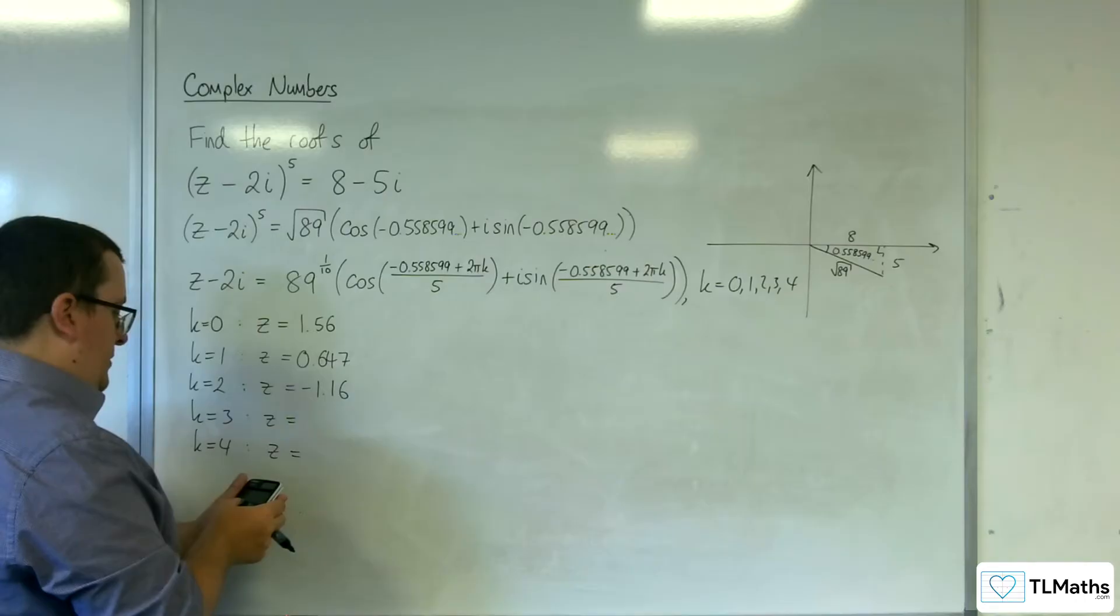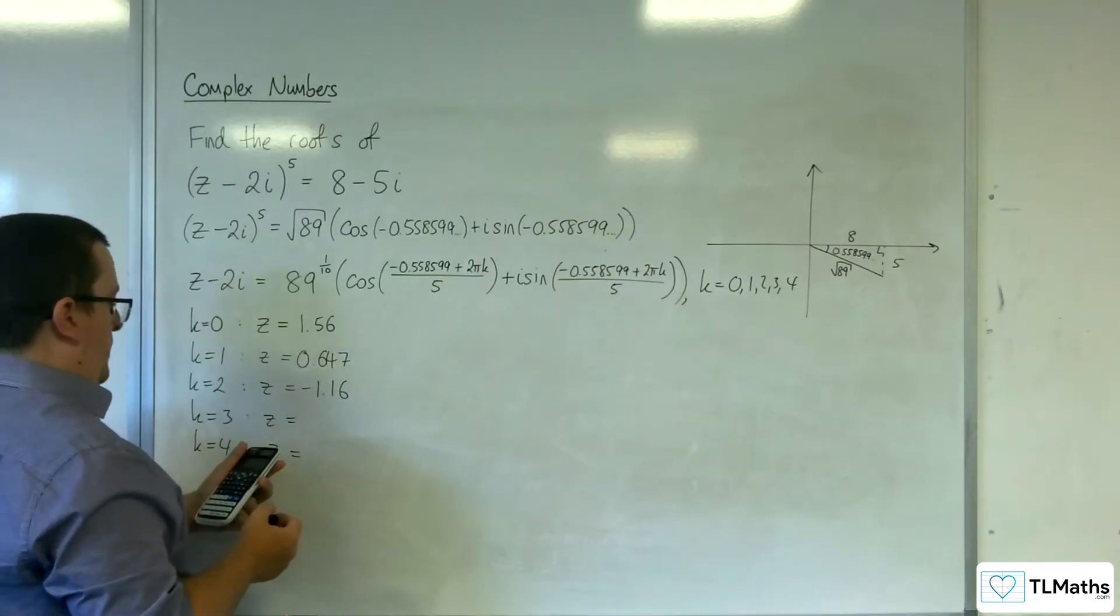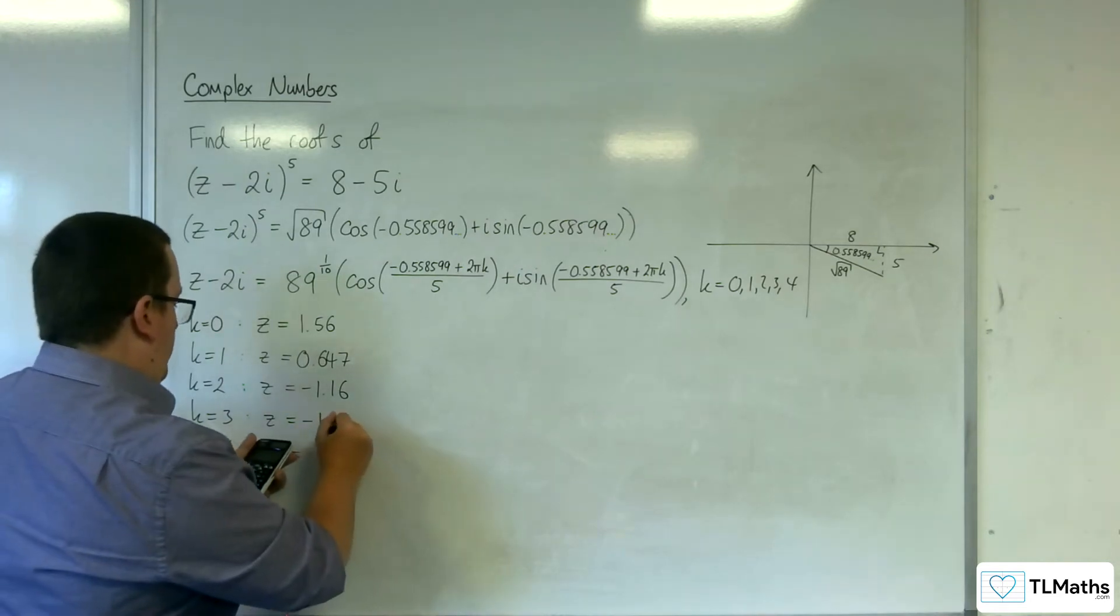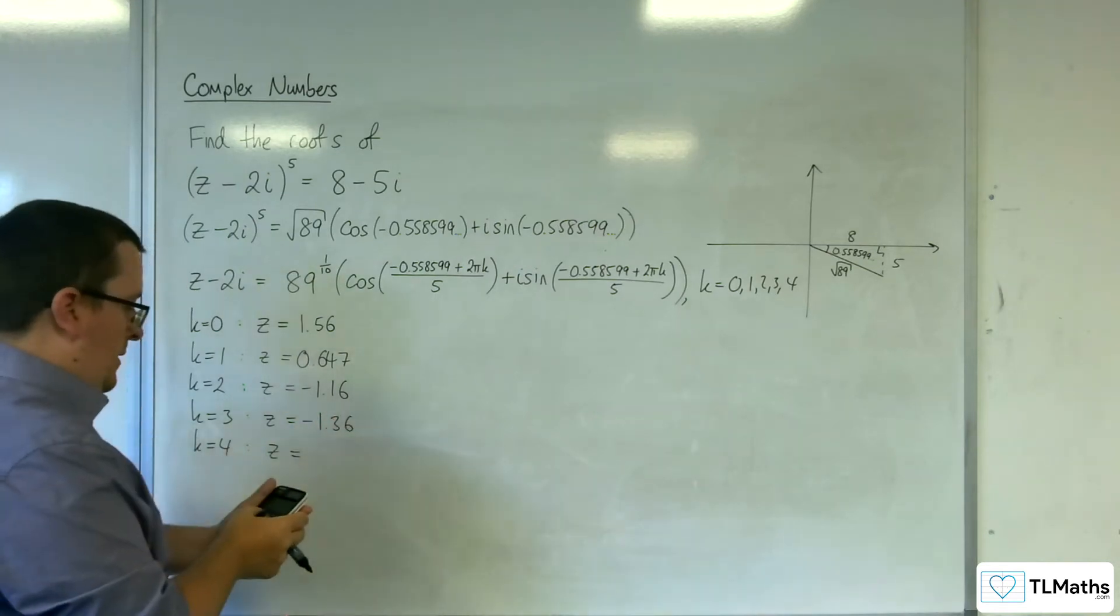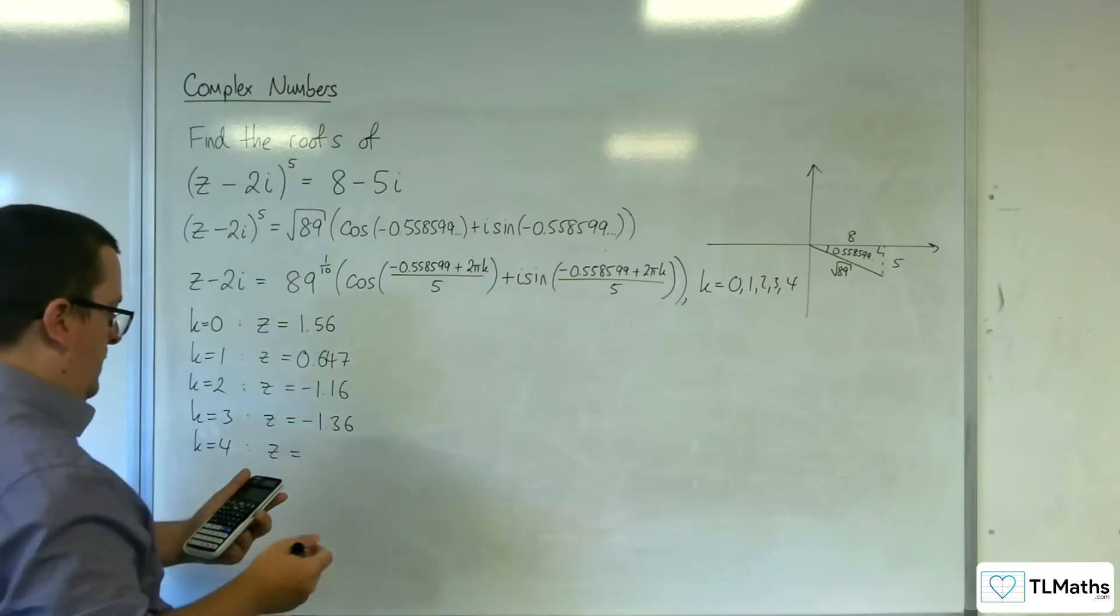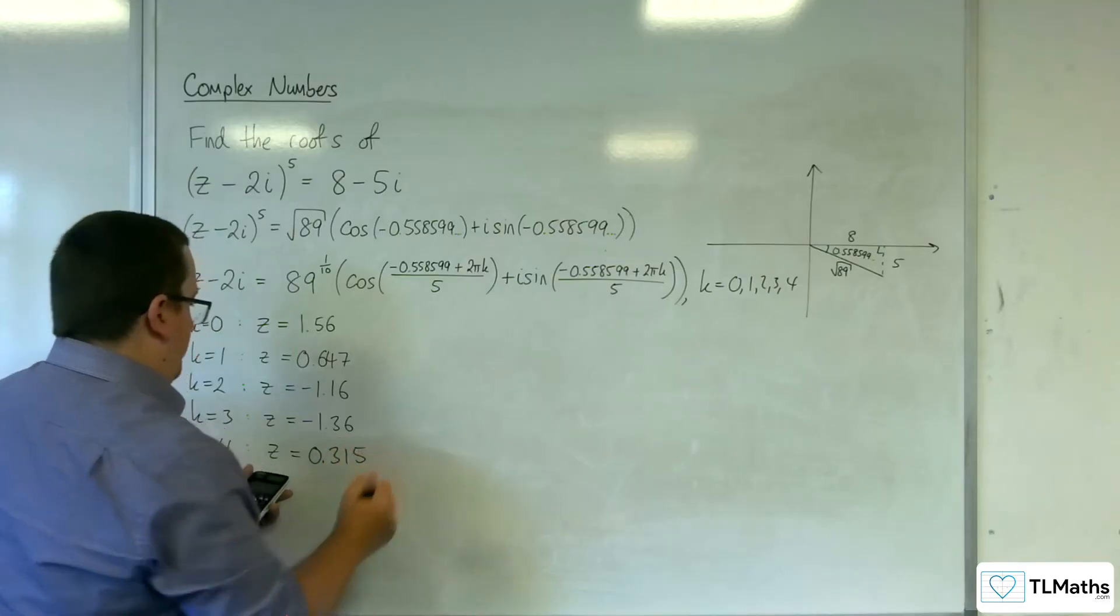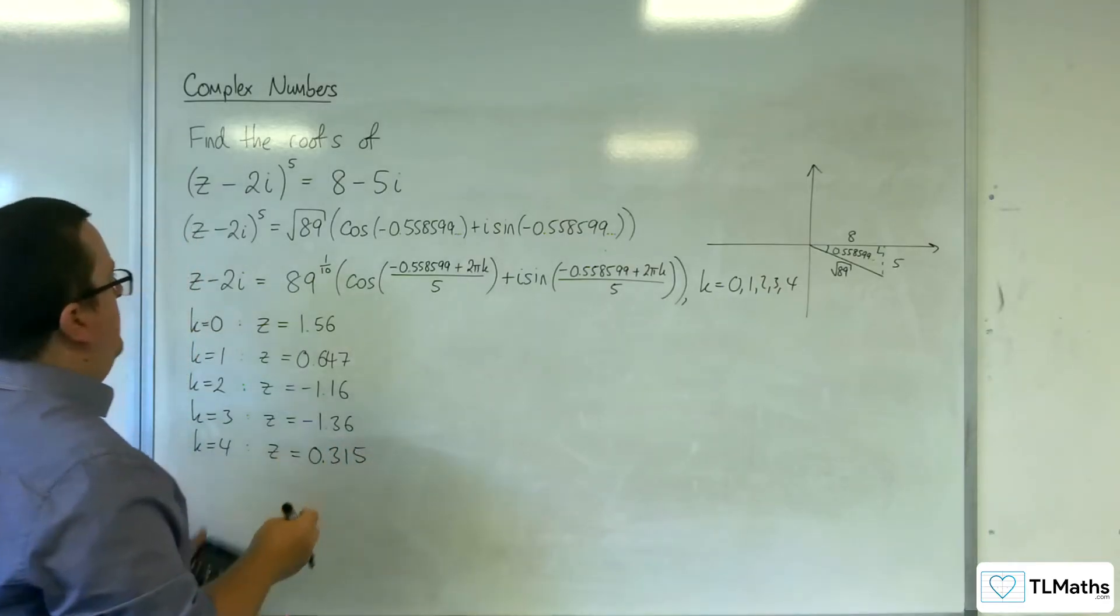And when we've got 6pi, we're going to get minus 1.36. And finally, for 8pi, we get 0.315.